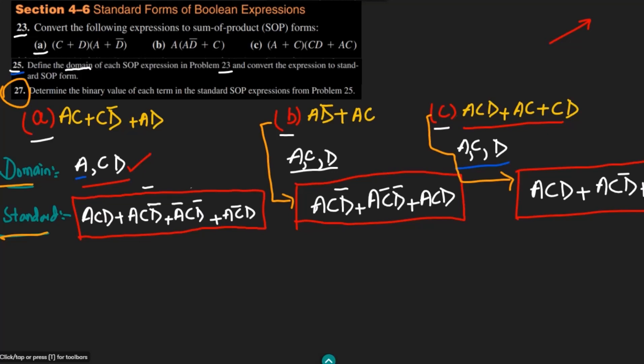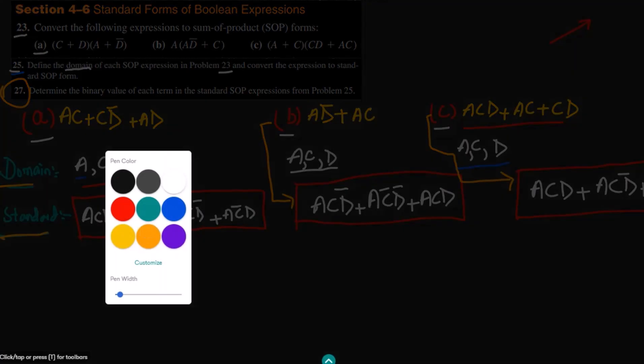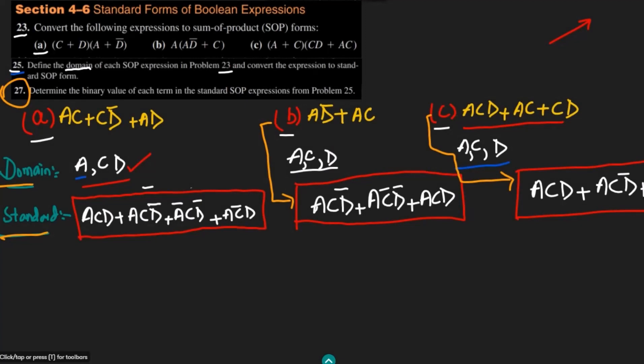These are the solutions of problem 25, and here we have to find the binary values of each term. In order to find the binary values, let me select this white color as well. The binary value for ACD should always be 1, 1, 1.